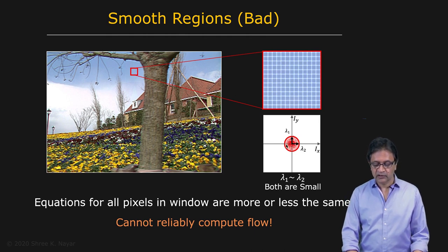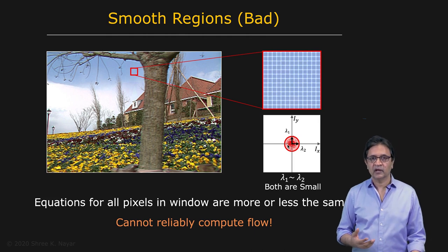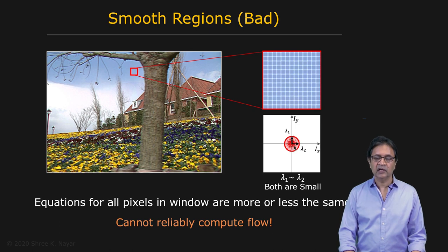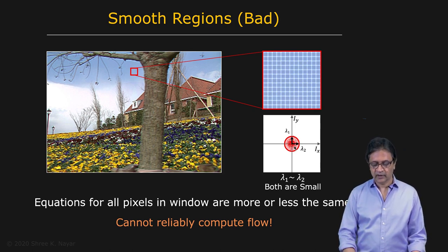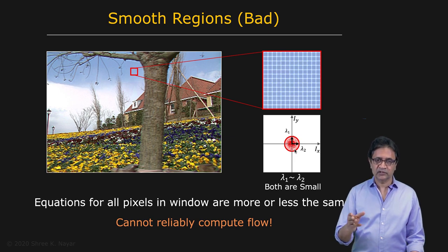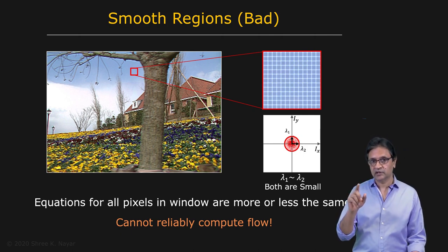They're all close to zero as expected, because there's not much texture in this window right here. And so the way to visualize the condition number and how good the matrix A transpose A is, is that you take all of these points in Ix Iy space and imagine fitting an ellipse to it. And that is the best fit ellipse that you see, happens to be close to a circle in this case. The semi-major axis and semi-minor axis of this ellipse that you fit correspond to the eigenvalues lambda one and lambda two of the matrix A transpose A.